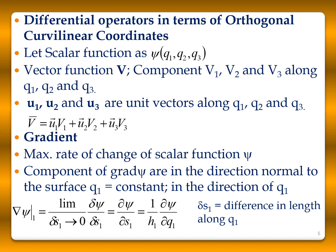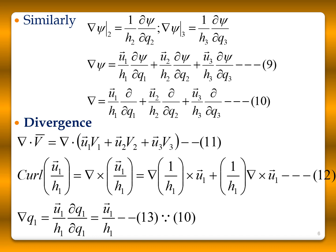Similarly, the component of del ψ along q2 is (1/h2)(∂ψ/∂q2) and along q3 is (1/h3)(∂ψ/∂q3). Therefore, the gradient is: del ψ = (u1/h1)(∂ψ/∂q1) + (u2/h2)(∂ψ/∂q2) + (u3/h3)(∂ψ/∂q3). The del operator is: del = (u1/h1)(∂/∂q1) + (u2/h2)(∂/∂q2) + (u3/h3)(∂/∂q3).